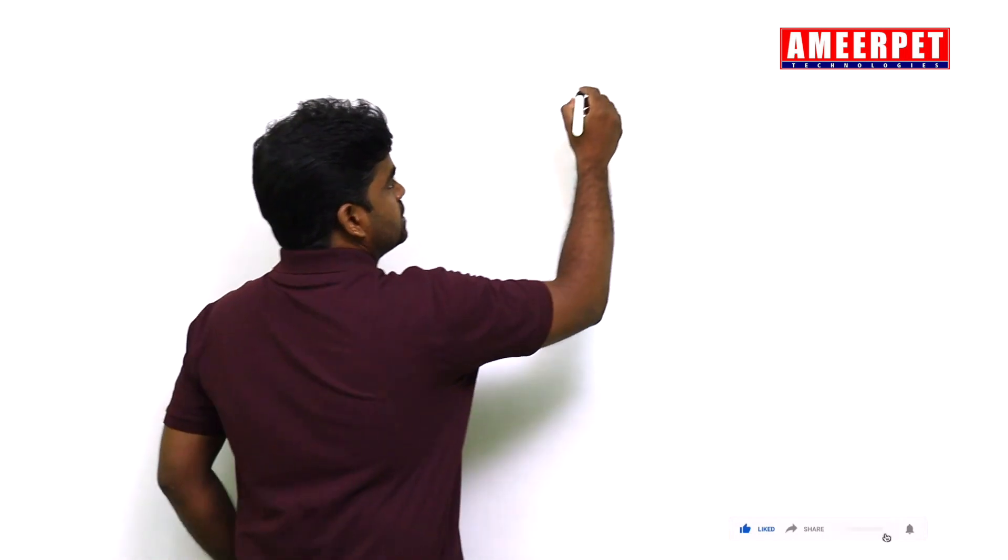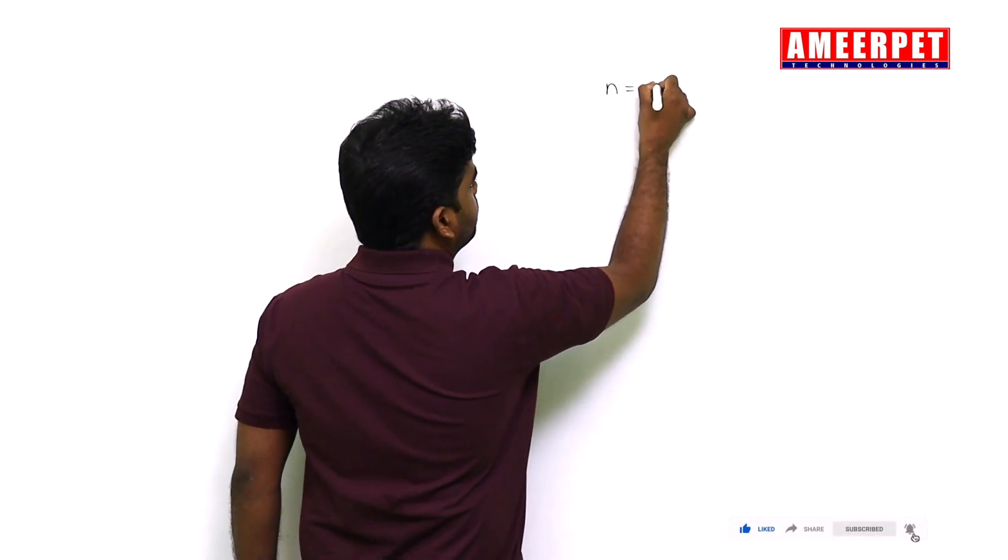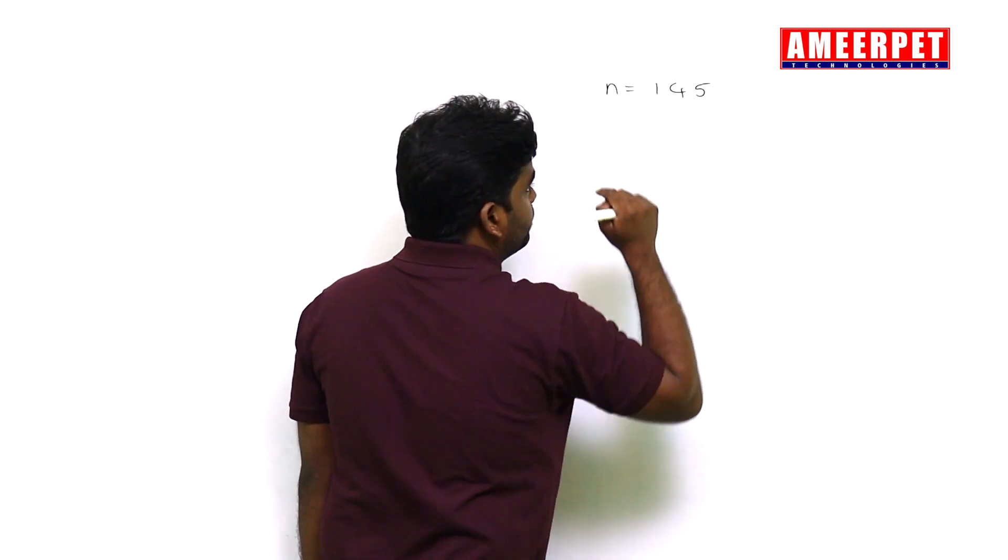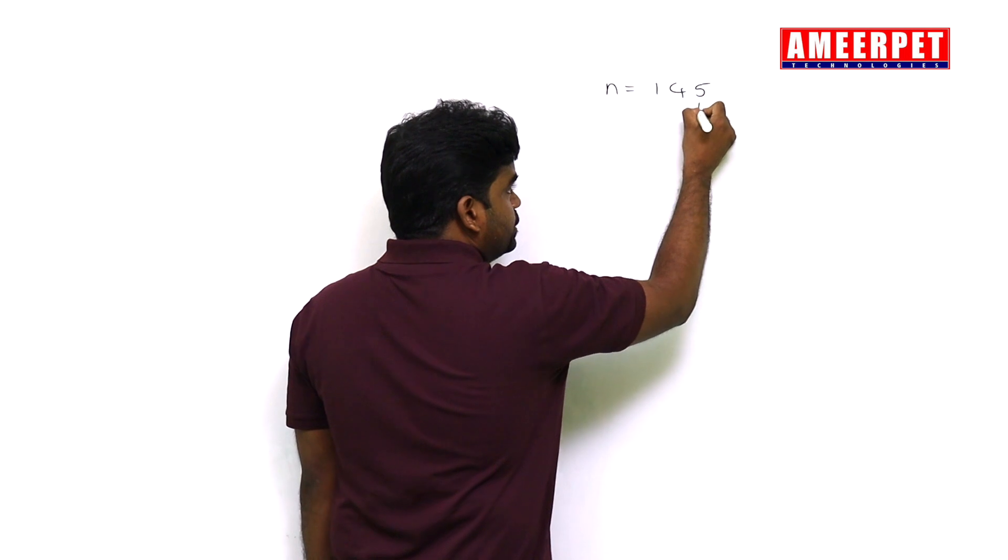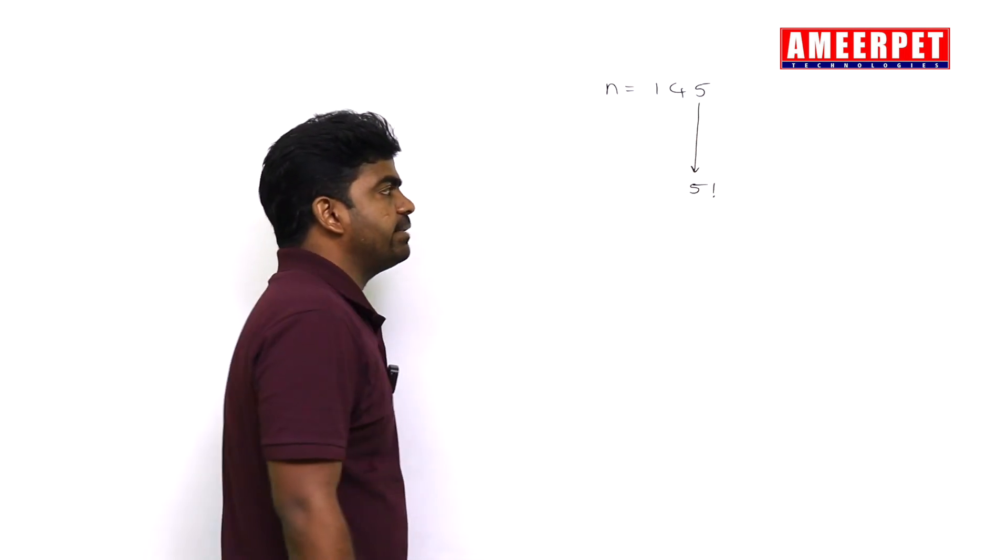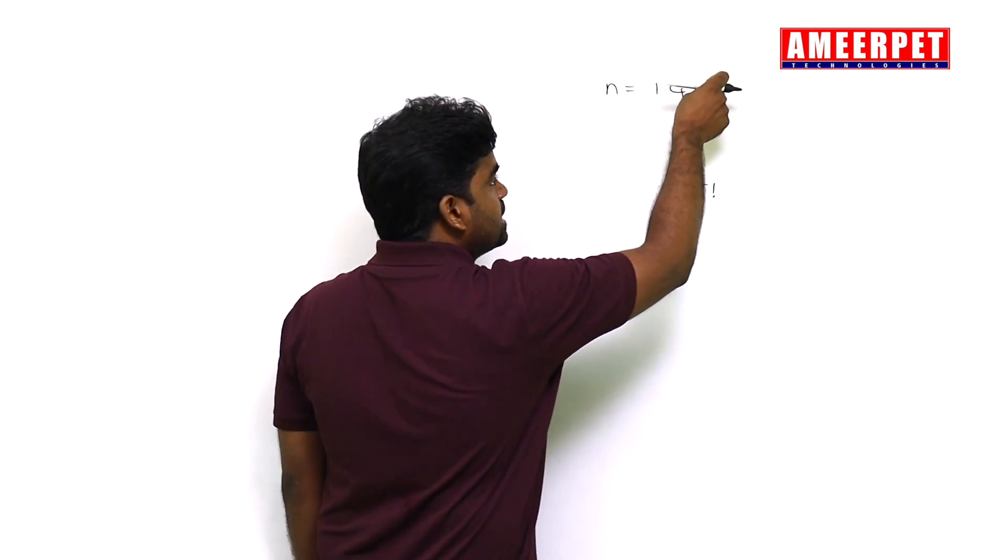Suppose you are taking one number, consider 145. It's a strong number. I have taken this directly. If you get each digit from the number and find the factorial, get the last digit and find the factorial, that is 120.